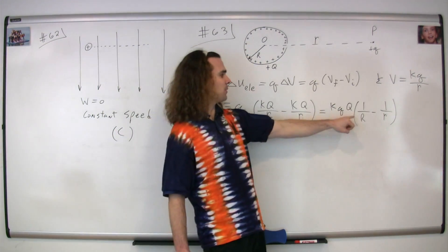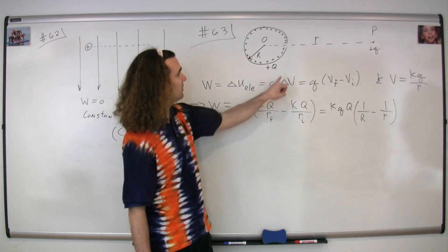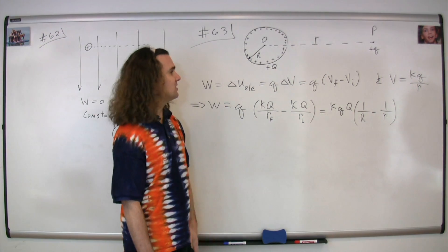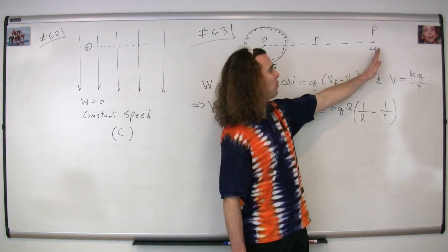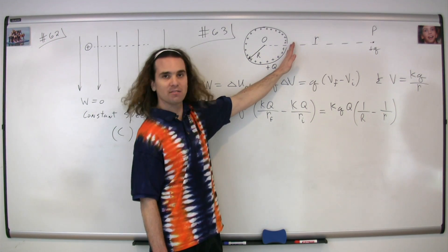Pulling out k capital Q, we have k little q times capital Q multiplied by one over capital R minus one over little r. This is the work necessary to move positive little q from point P to the surface of this sphere.